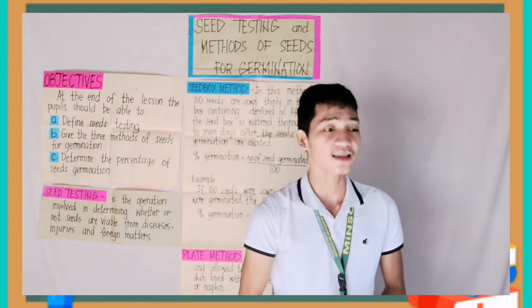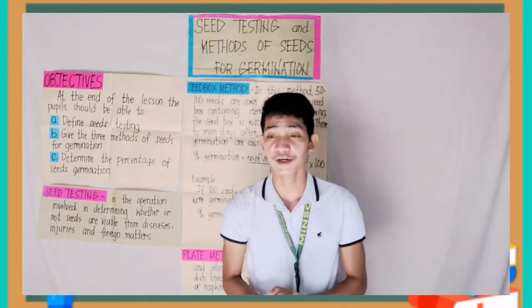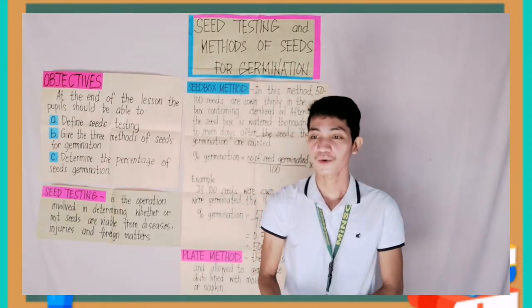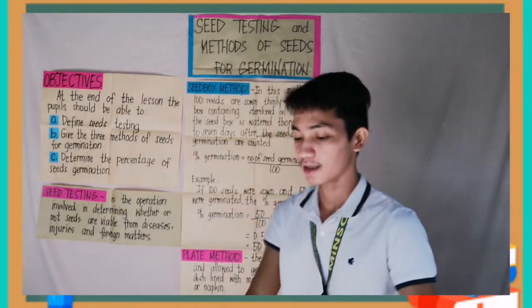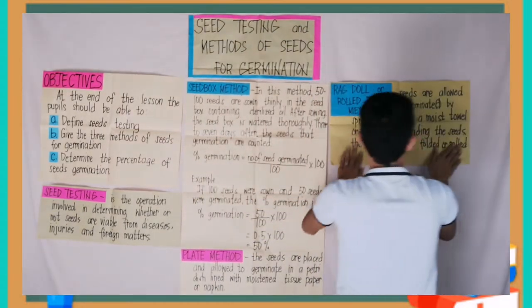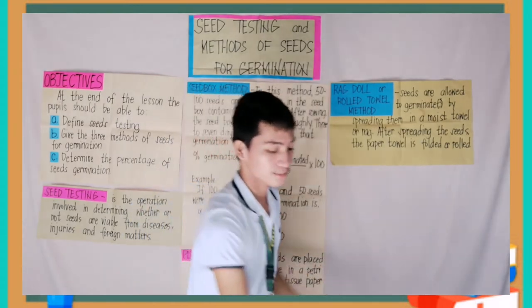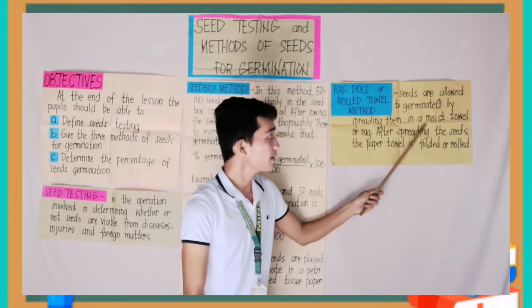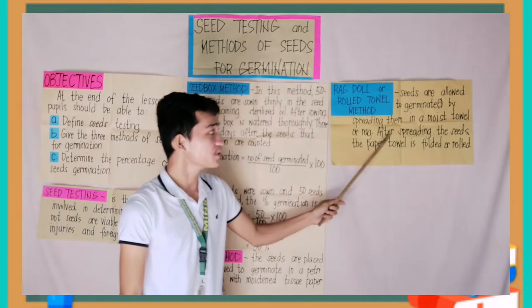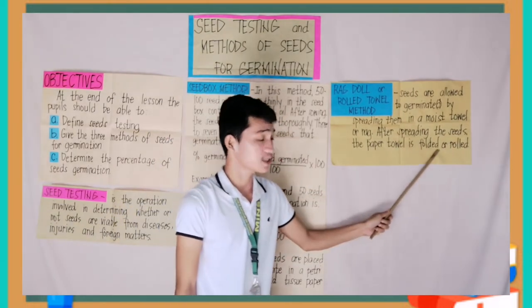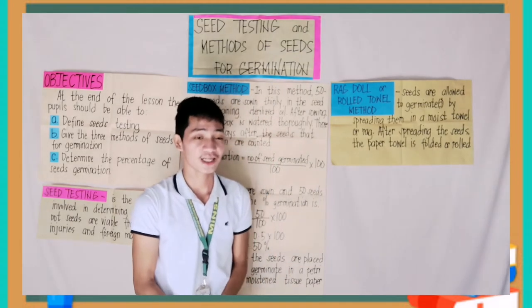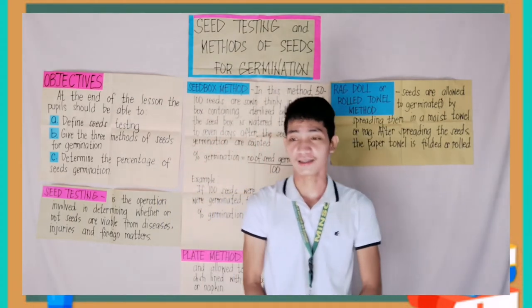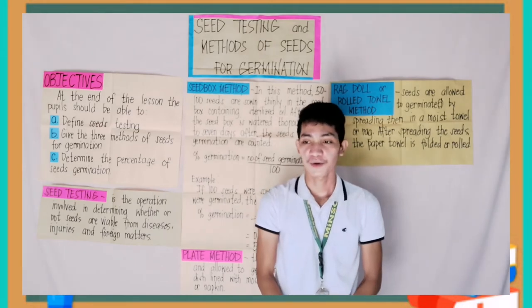Now let's move on to our third method: the ragdoll or rolled towel method. Do you know this method, class? Yes, Justin — okay, that's right. In the ragdoll or rolled towel method, seeds are allowed to germinate by spreading them in a moist towel or rag. After spreading the seeds, the paper towel is folded or rolled. Who can give the steps in the ragdoll or rolled towel method?